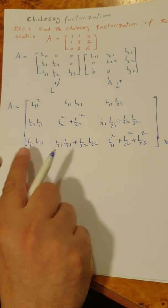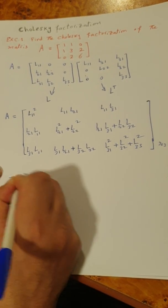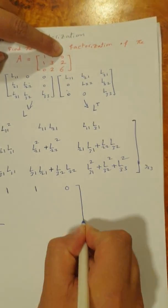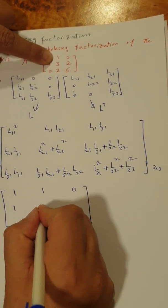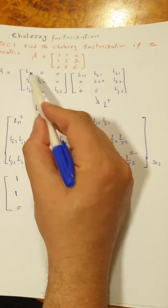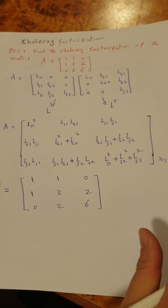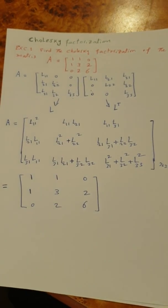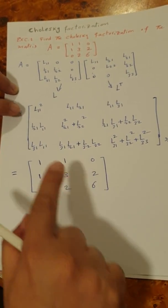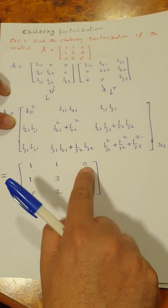By comparing the product matrix with the original matrix A — which has elements 1, 1, 0 in the first row; 1, 3, 2 in the second row; and 0, 2, 6 in the third row — we have 6 unknowns to determine. If we find these 6 unknowns, we obtain the Cholesky factorization of matrix A. Since two equal matrices have equal corresponding elements, we compare each element.